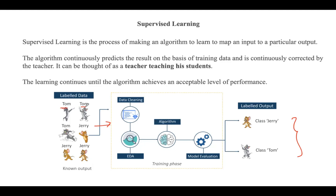We are showing the machine how Tom looks and how Jerry looks, thereby training the machine using labeled data. In supervised learning there is a well-defined training phase done with the help of training data. Once it knows these images, if an image looks like Tom it predicts Tom, otherwise Jerry, classifying new images correctly.